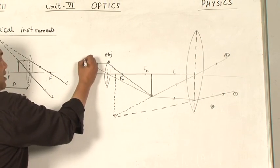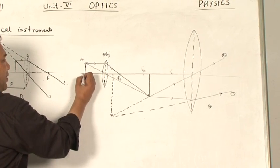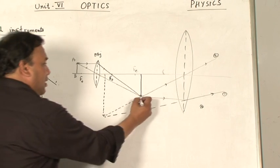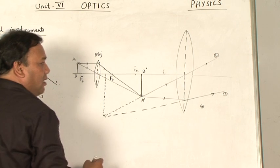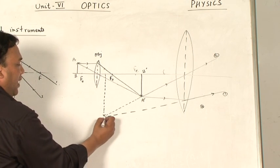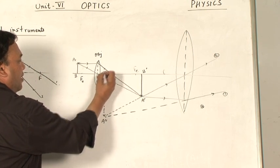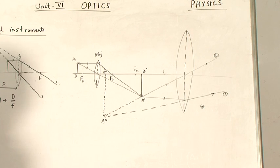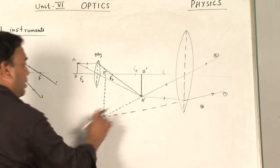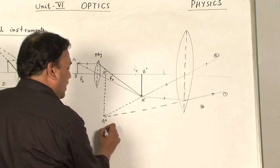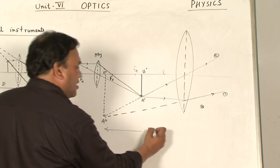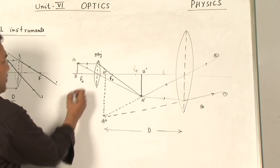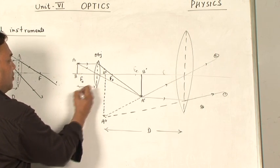If I label it, then this is A, B which is the original object. Then this is the first image - this is A dash, this is B dash. Then the final image will be A double dash, B double dash. The images and the distances - this is the final image distance, it is at least distance of distinguishing, and this is the object distance u.